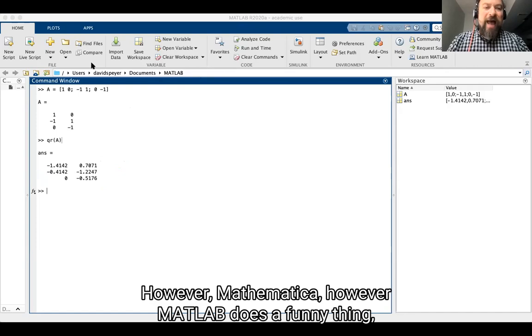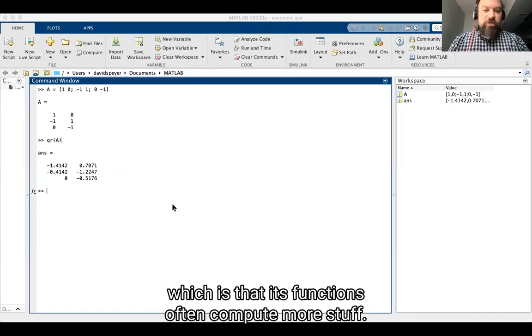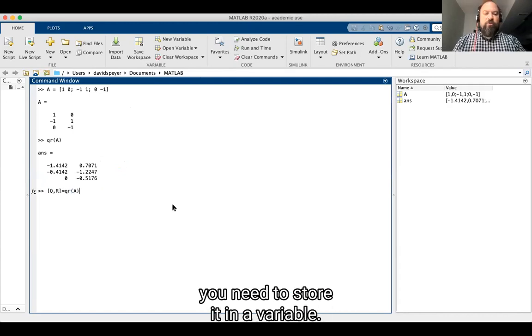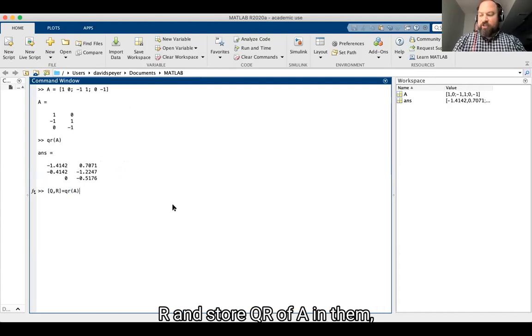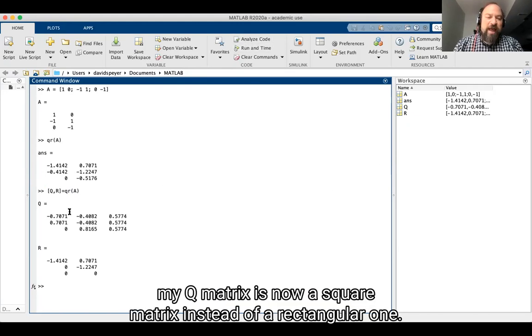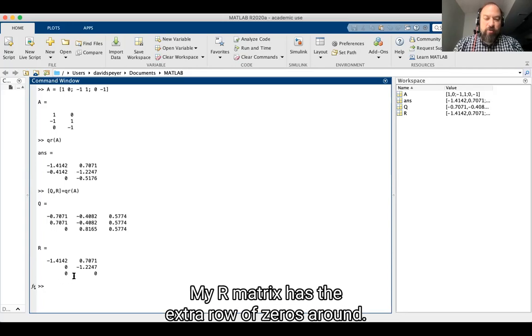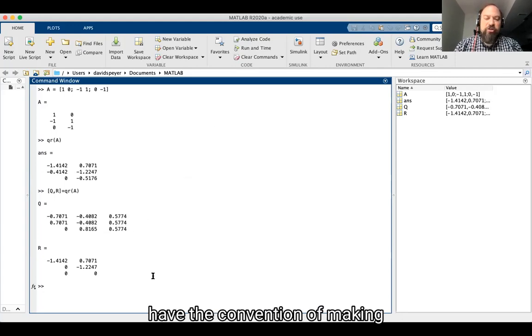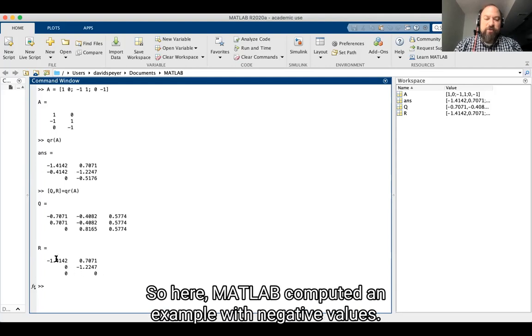So this is the matrix Q. It's the same shape as A. However, MATLAB does a funny thing, which is that its functions often compute more stuff than it returns as output. And if you want to get the more stuff, you need to store it in a variable. So if I take the variables Q and R and store QR of A in them, then it computes both the Q matrix and the R matrix. And strangely, my Q matrix is now a square matrix instead of a rectangular one. My R matrix has the extra row of zeros added on. You can also notice that MATLAB does not have the convention of making diagonal entries of R be positive. So here they are, MATLAB computed an example with negative values.